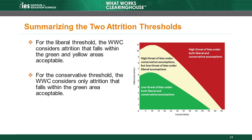The graph on this slide illustrates the two attrition thresholds simultaneously and is the figure that appears in the WWC Procedures and Standards Handbook. For the liberal threshold, attrition that falls within the green and yellow areas is acceptable. For the conservative threshold, only attrition that falls within the green area is acceptable. Attrition that falls within the red area is not acceptable under either scenario.